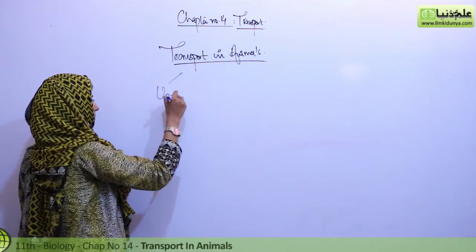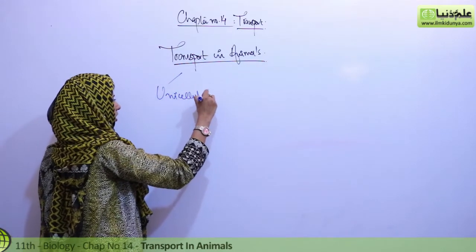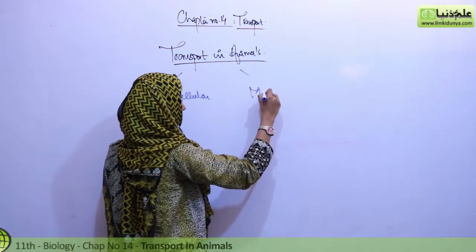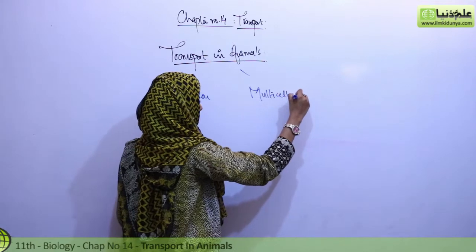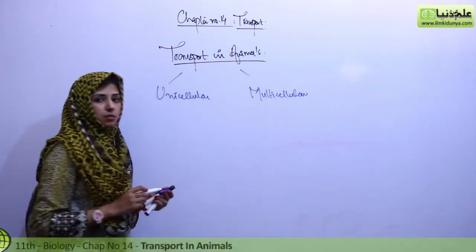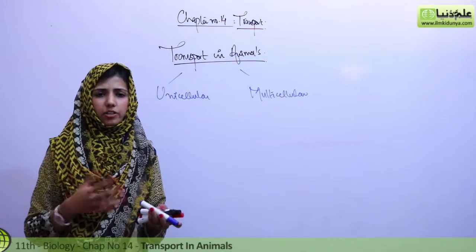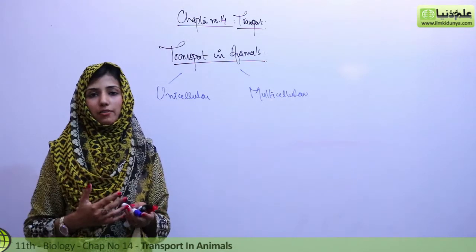We will talk about the unicellular organisms as well as the multicellular organisms. In the unicellular organisms, hydra and amoeba are very micro level.